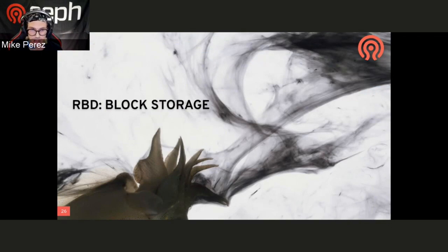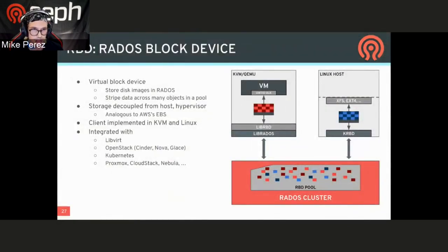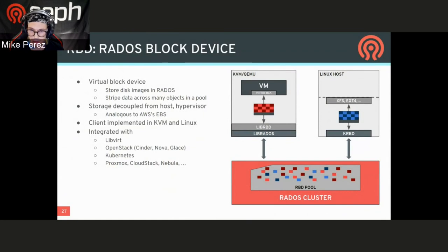Next, I'll talk about the RADOS Block Device interface. The RADOS Block Device interface allows you to have volumes. These volumes are created at a set size and then could be extended out. They could be attached to virtual machines, containers, or whatever it may be. This is implemented specifically in KVM with KRBD, and it's integrated with libvirt, OpenStack, Kubernetes, and a variety of others. According to the OpenStack user survey, the Ceph RBD solution is used by more than half of the clusters reported.